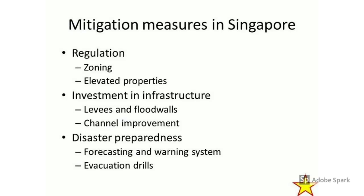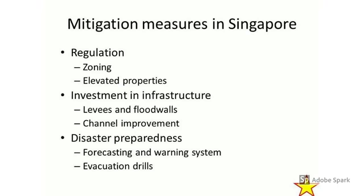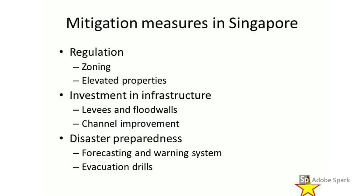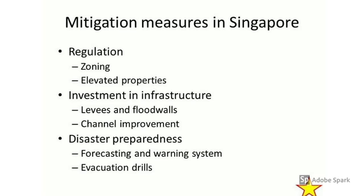Now we'll look at the mitigation measures we're learning today. They fall under three main categories: regulations, investments in infrastructure, and disaster preparedness. The six specific measures are: zoning, elevated properties, levies and flood walls, channel improvement, forecasting and warning systems, and evacuation drills. Take time to finish copying this before we go into the details.